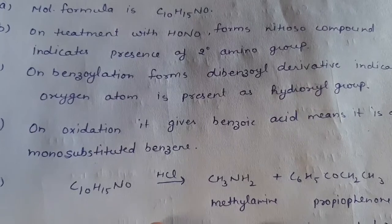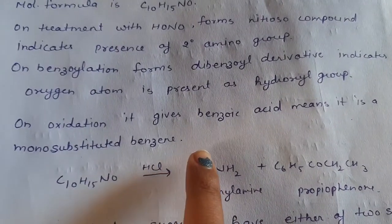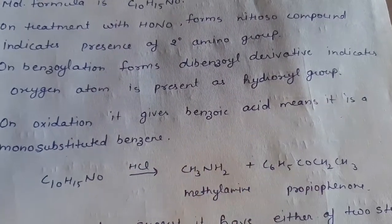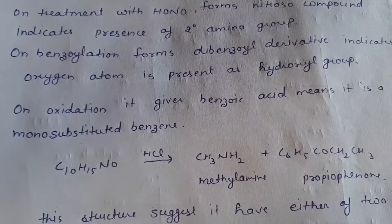Now, the next step in its structure elucidation is that on oxidation of ephedrine, we get benzoic acid. And this formation of benzoic acid elucidates that it is a monosubstituted benzene.